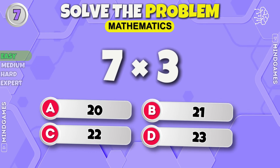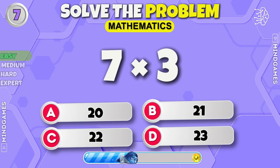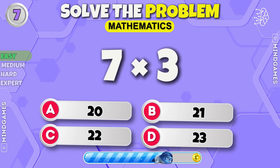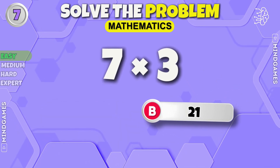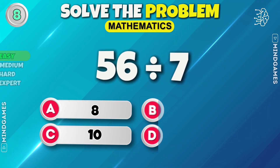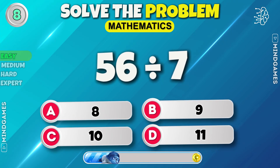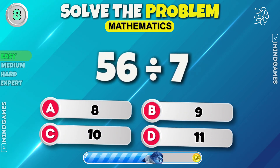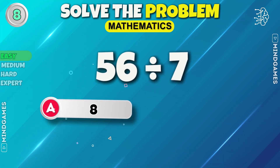Question number seven. It's 21. 56 divided by seven — question number seven. It's eight.